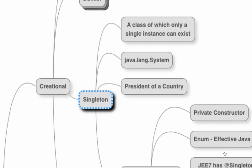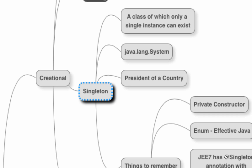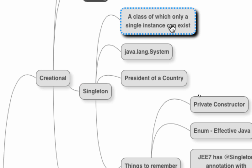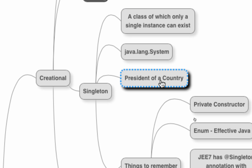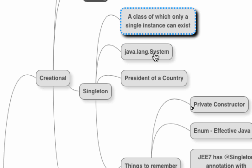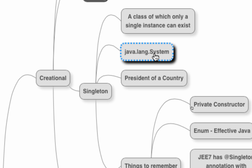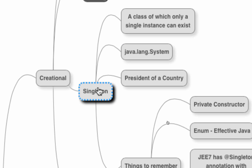Now let's move on to the singleton pattern, which is almost the simplest of all design patterns. The most important thing about singleton is that you can only have one instance of that particular class. A real-world example is a president of a country — there can only be one president. In Java, the system class is a good example of a singleton — the JVM runs on one system so system should be a singleton; you cannot have multiple systems.